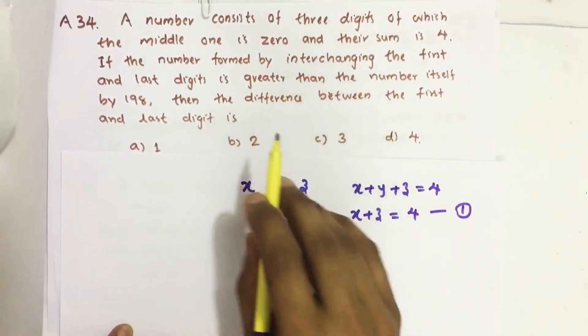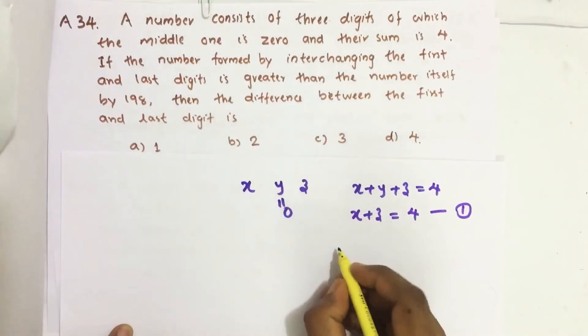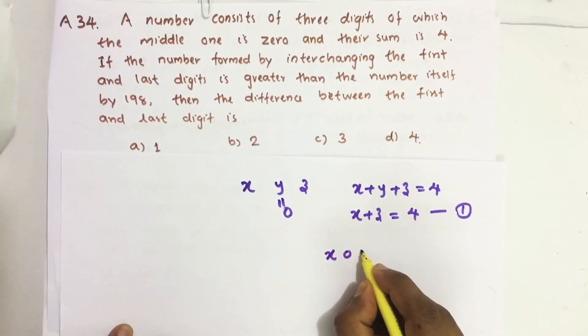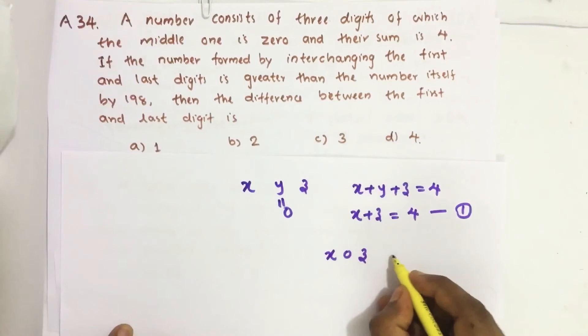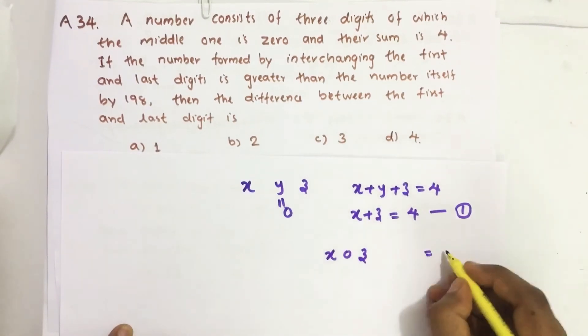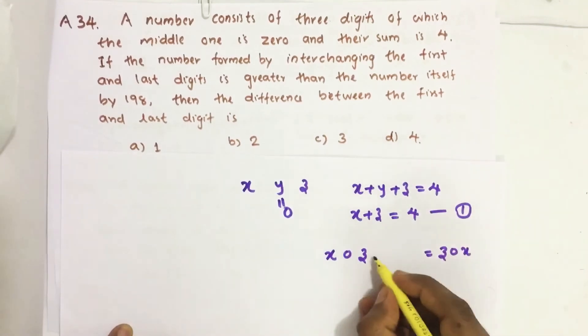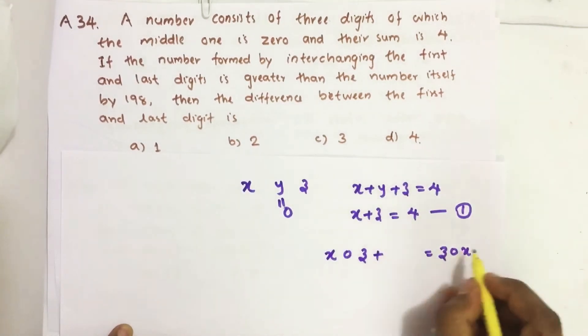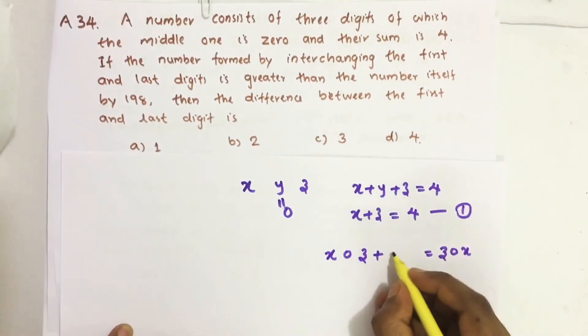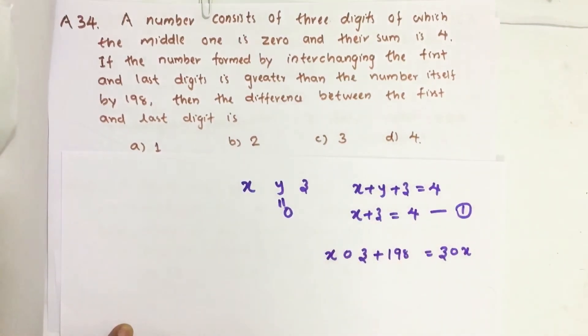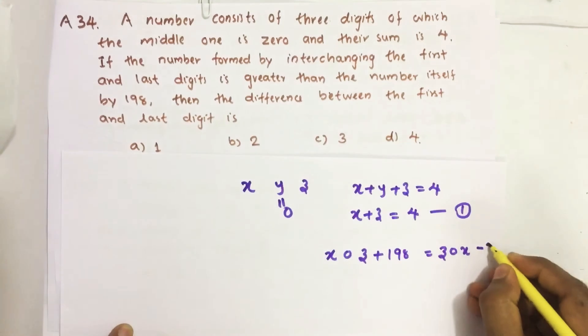Then it is given that if we are interchanging the first and last digits, our number is x, 0, z. If we interchange the first and last digit, we get z, 0, x. We get a number which is more than the first number by 198. This is equation number 2.